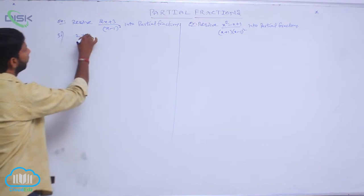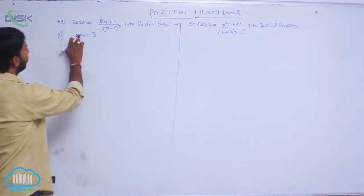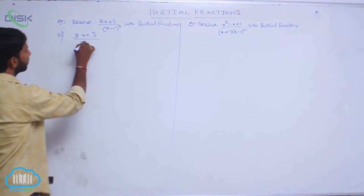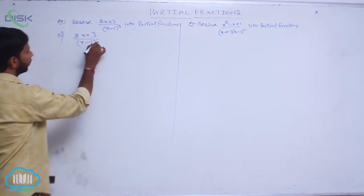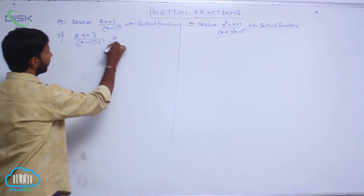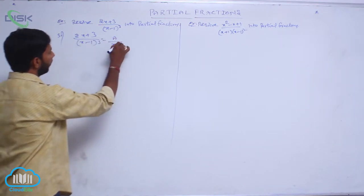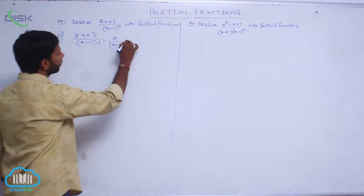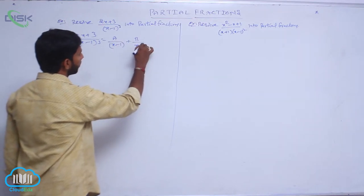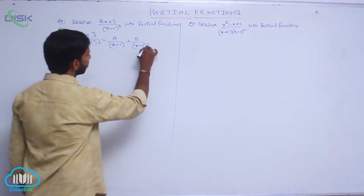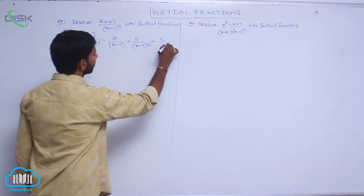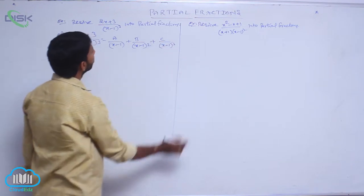Consider (2x + 3) / (x - 1)³. It can be written as A/(x - 1) plus B/(x - 1)² plus C/(x - 1)³. This is condition number 1.